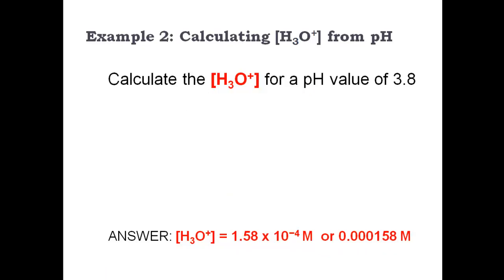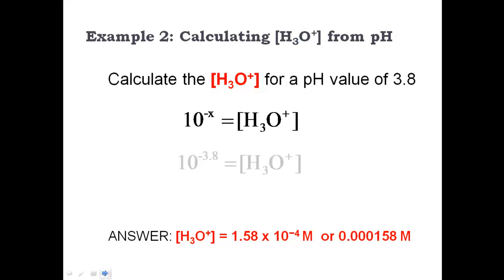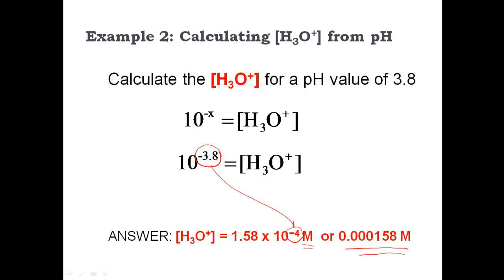Example number 2: plug 3.8 into the formula. You do the second/shift function to get 10 to the negative X and then plug in 3.8. On older calculators, enter negative 3.8 first, then hit the second log button. After you plug and chug, the answer is 1.58×10⁻⁴. Notice that the pH and the concentration exponents are very similar — always a good ballpark check. This is molarity — moles per liter — and you can also express it in regular notation rather than scientific notation.